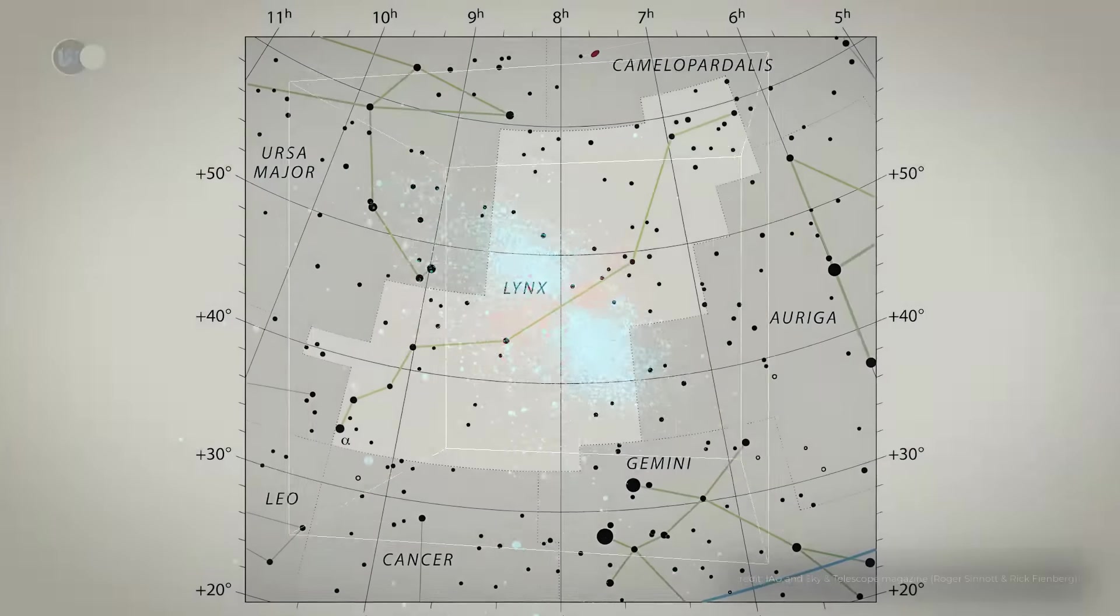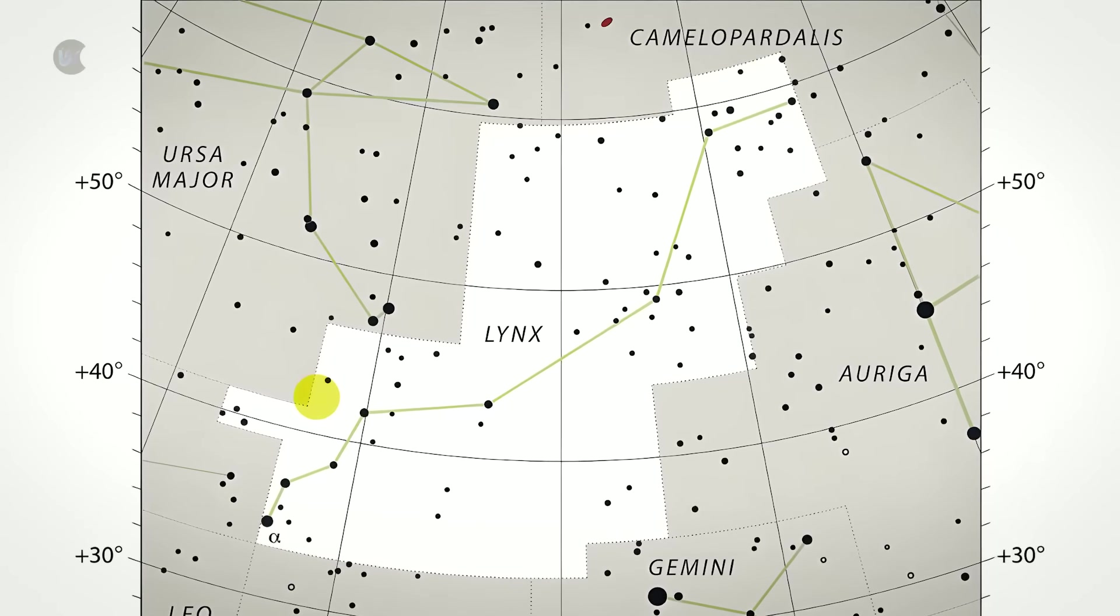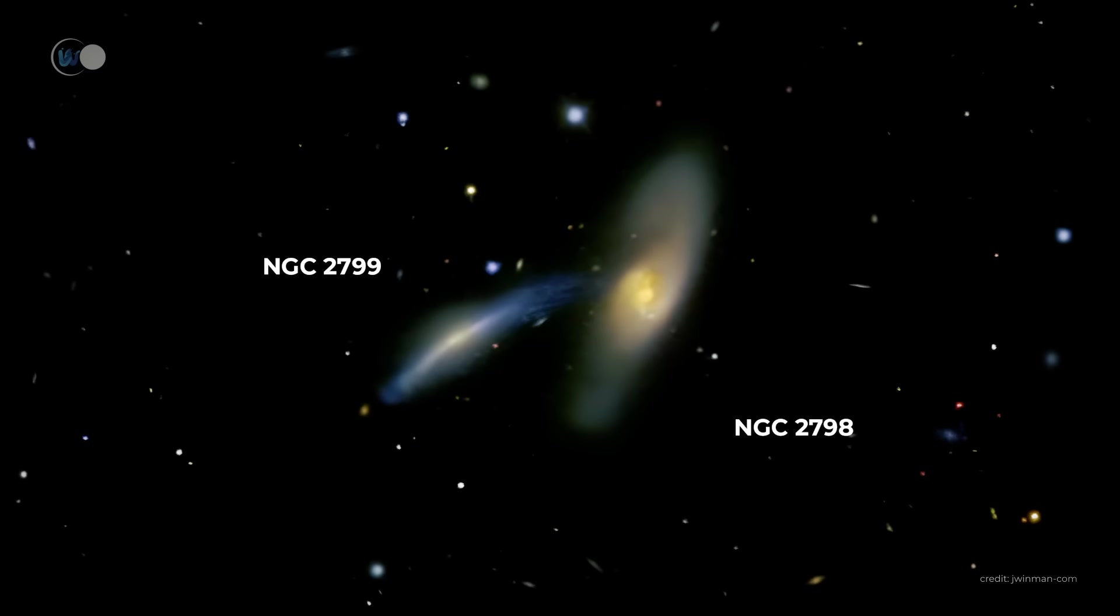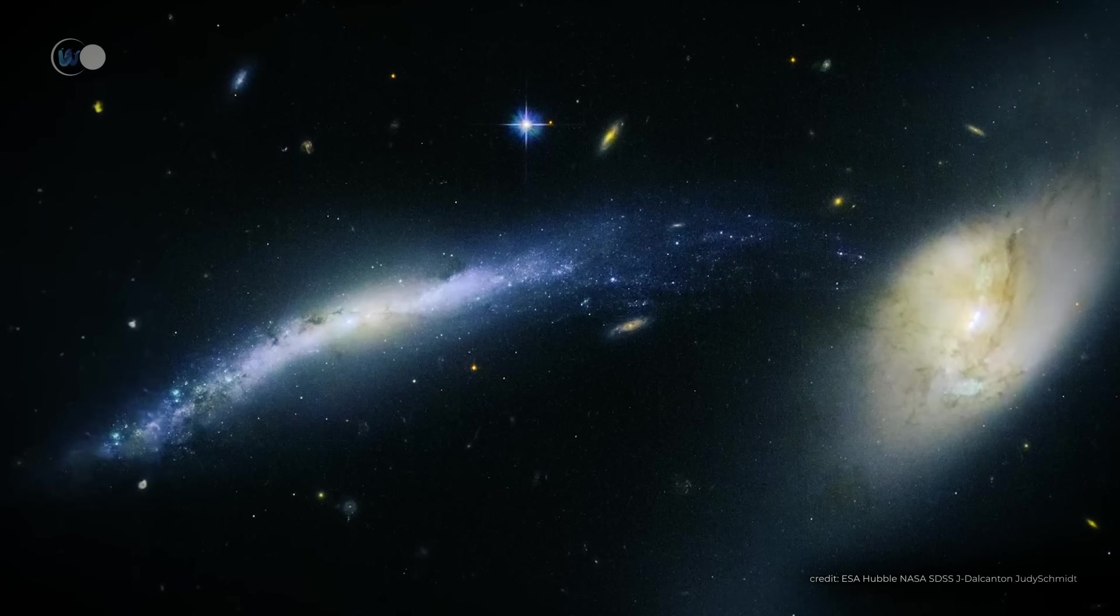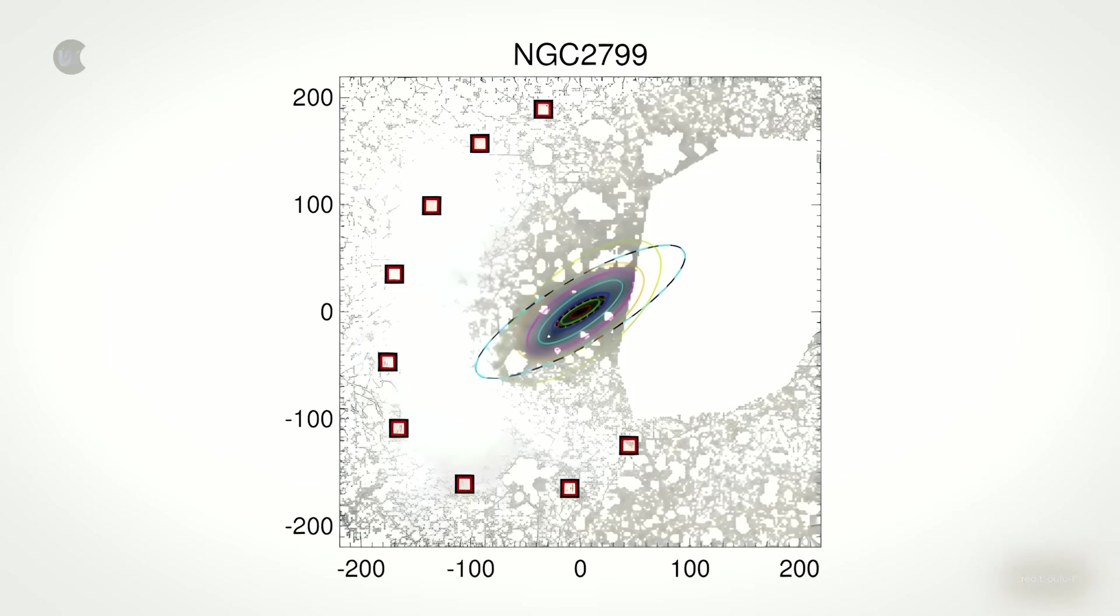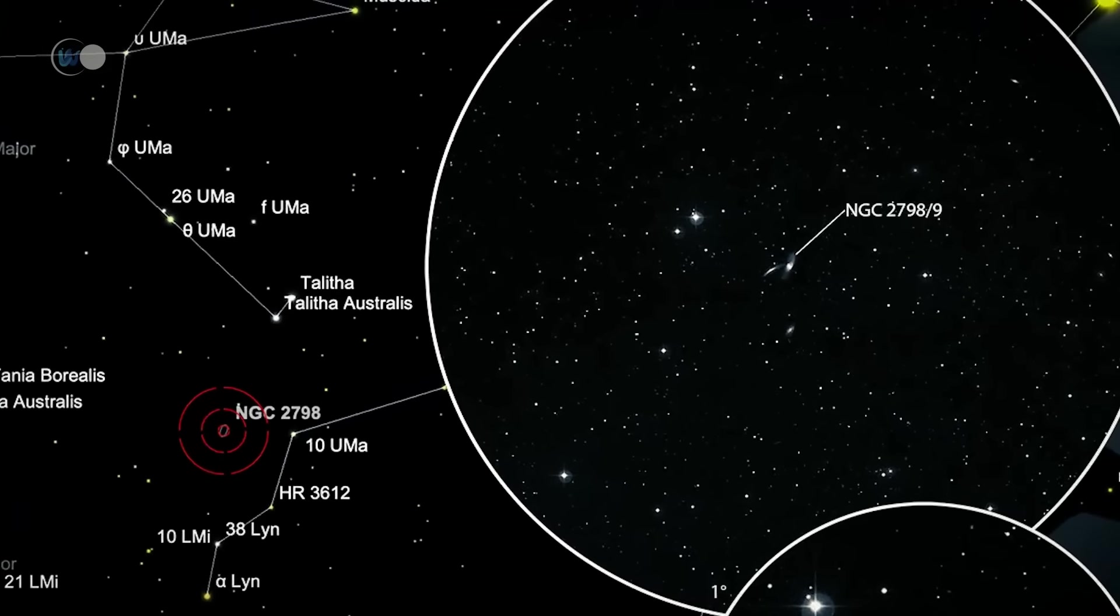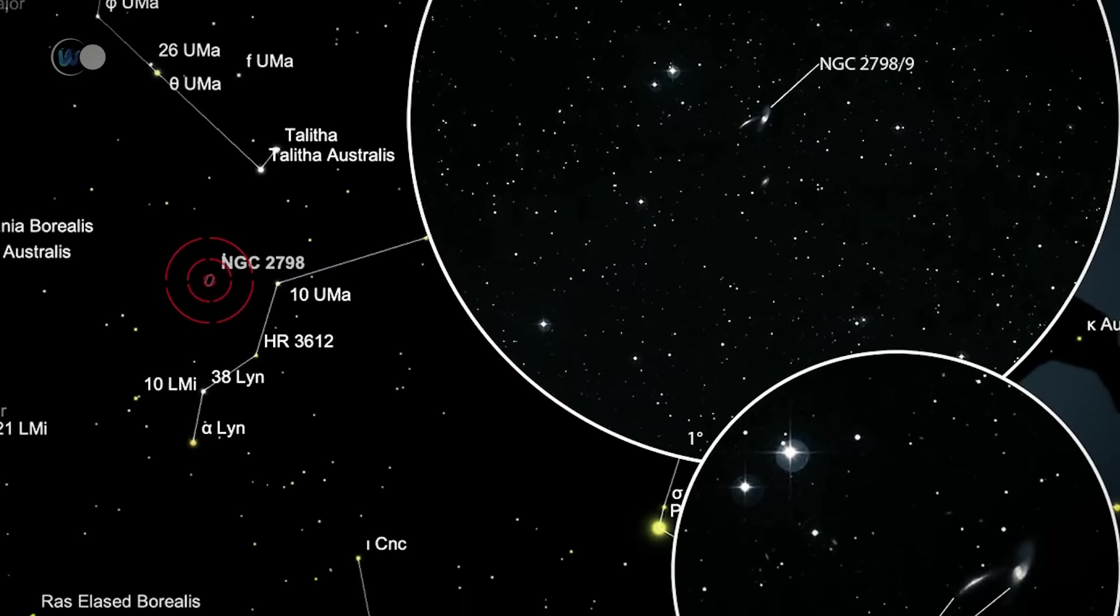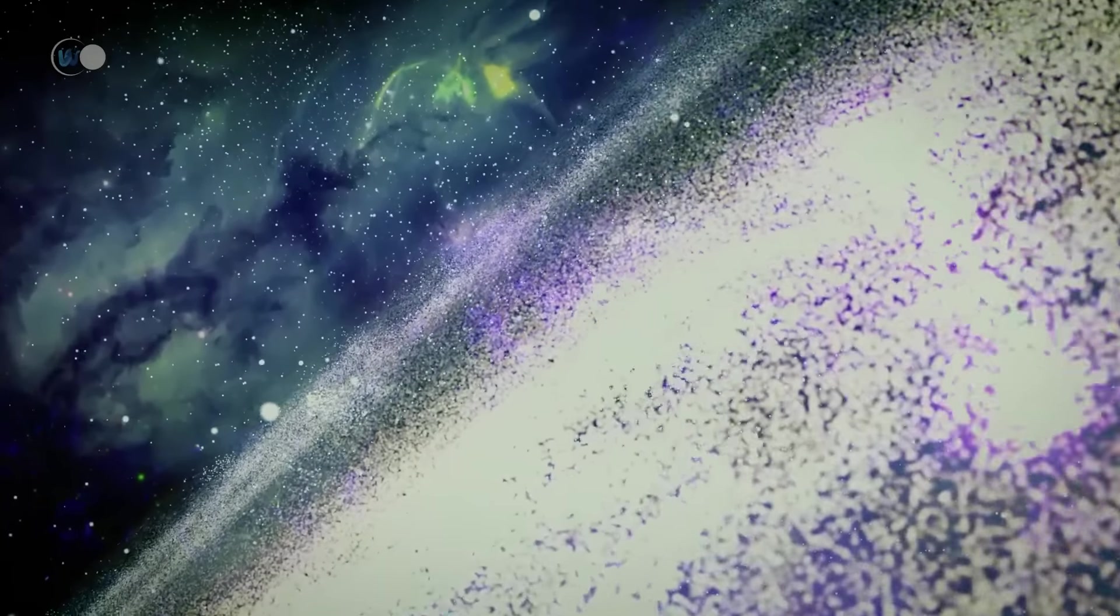In the Lynx constellation, two galaxies were caught in the act of cannibalism. NGC 2798 is a barred spiral galaxy, 93.9 million light-years away. Its diameter is around 76,300 light-years. NGC 2799 is a Magellanic type barred spiral galaxy. Its diameter is around 55,400 light-years. NGC 2798 was first discovered in 1788 by William Herschel due to its slightly higher brightness. NGC 2799 was discovered in 1874 by astronomer Ralph Copeland.